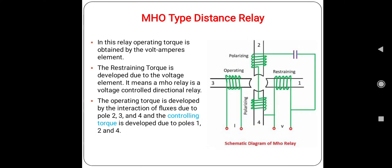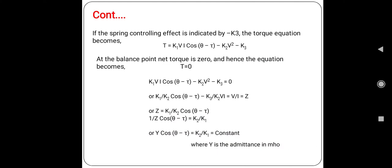If the spring control effect is indicated by minus K3, the torque equation becomes K1·V·I·cos(θ - τ) minus K2·V² minus K3. This component is basically due to the current, this component is basically due to the voltage, and this is due to the spring.